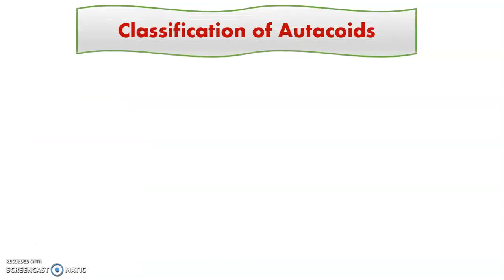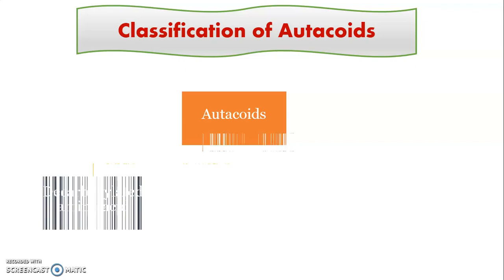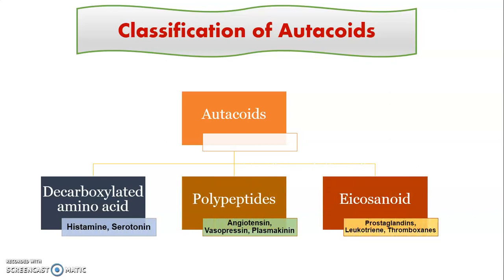Now, in terms of classification, autocoids are classified into three categories depending on their chemical structures. First, amine derivatives — also called decarboxylated amino acids — such as histamine and serotonin. Second, protein or polypeptide derivatives, such as angiotensins, vasopressins, plasma kinins, and bradykinin. Third, eicosanoids — also called lipid-derived autocoids — such as prostaglandins, leukotrienes, and thromboxanes.